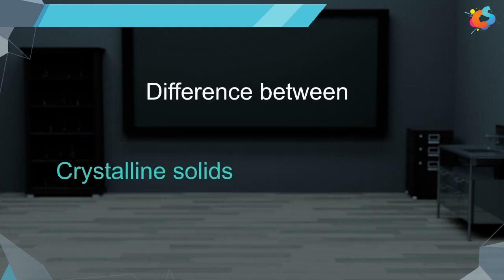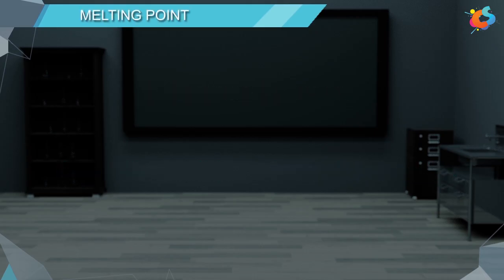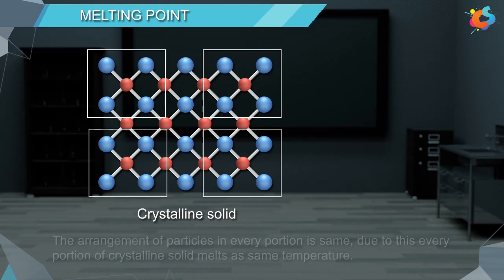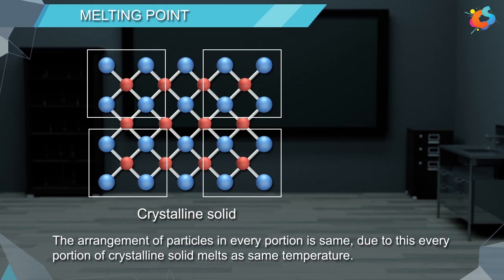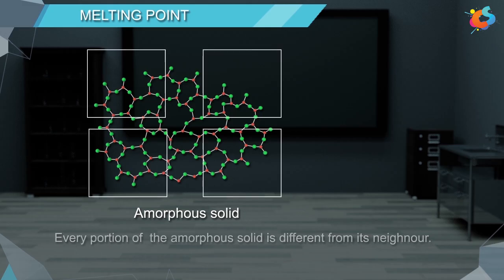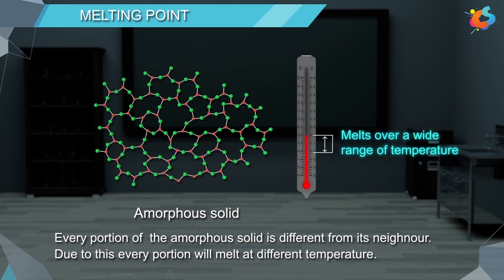Let's differentiate between crystalline and amorphous solids. The first difference is melting point. In crystalline solids, the arrangement of particles in every portion is the same, so every portion melts at the same temperature — therefore crystalline solids have a sharp melting point. Whereas in amorphous solids, every portion is different from its neighbour, so every portion melts at a different temperature — therefore amorphous solids melt over a wide range of temperature.